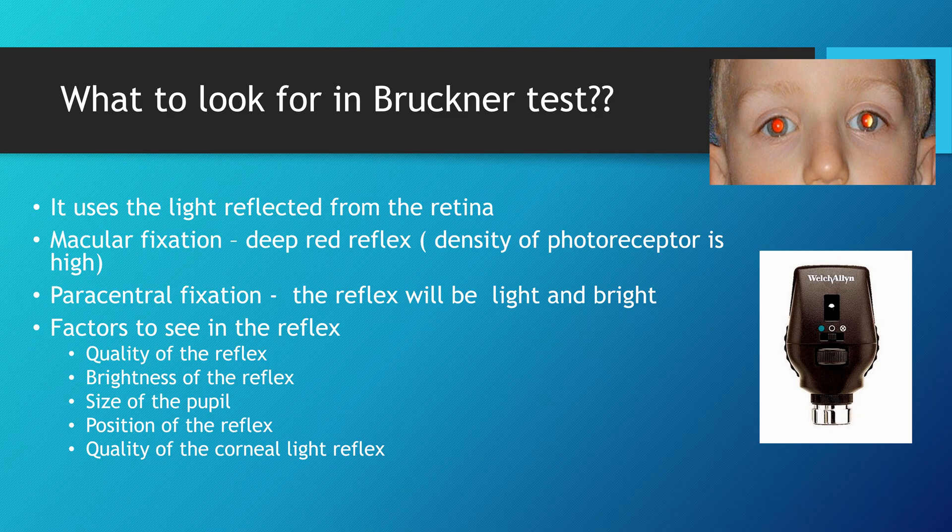So what to look for in the Brückner test? It uses light reflected from the retina, so we get a red reflex from the retina. When the eye has macular fixation, we see a deep red reflex, which means the density of photoreceptors is very high. But when the eye has paracentral fixation, the reflex will be a little lighter and brighter. So in the Brückner test, the eye which has a bright light reflex is the eye under suspicion.